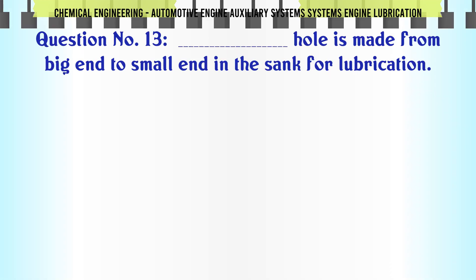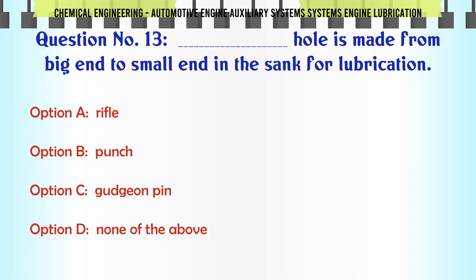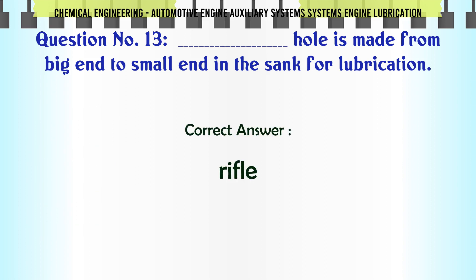Which hole is made from big end to small end in the shank for lubrication? a) rifle, b) punch, c) gauge pin, d) none of the above. The correct answer is rifle.